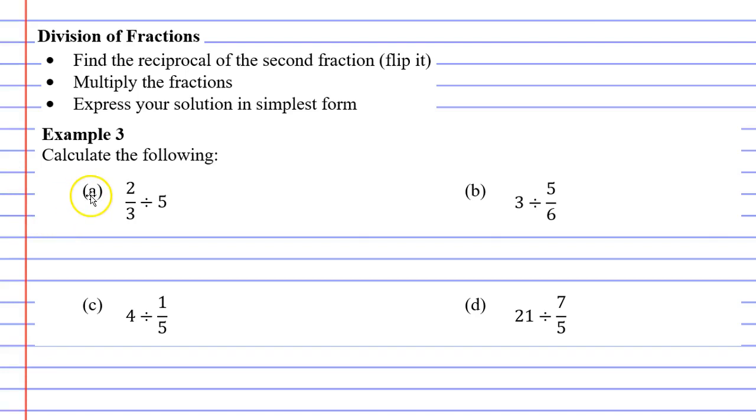So let's look at question A. You'll notice we've got two-thirds divided by five, and you might think to yourself, how are we going to flip this five? How do we flip a whole number? We discussed this earlier, you can rewrite a whole number as five over one. So now we can flip it.